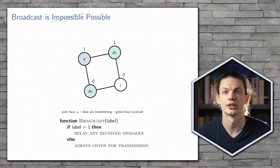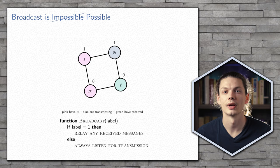So this time, when the source processor transmits its message, it will be received by both of its neighbors. However, only processor P1 will relay this message. And so we avoid the collision at that last processor, and it does receive the message. The broadcast is complete.